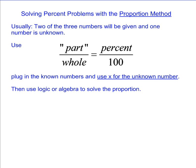To solve a percent problem using the proportion method, usually two of the three numbers will be given and one of them will be unknown. We're going to use the proportion part over whole equals percent over 100. We're going to plug in the known numbers and use x for the unknown number. Once you have the proportion set up, then you can use logic or algebra to solve the proportion.